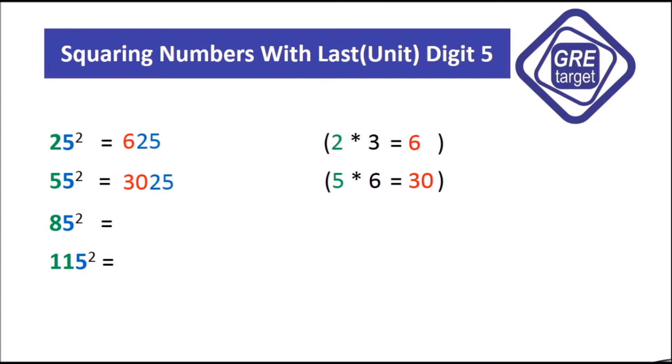Let's take 85. Now once again, take the number which is in front of 5, which is 8, multiply with one bigger number than itself, which is 9. 8 nines are 72. Write over here, which is 72, and simply add 25 in the end.